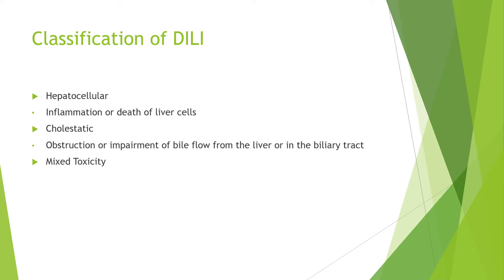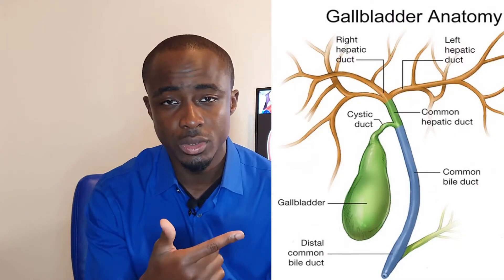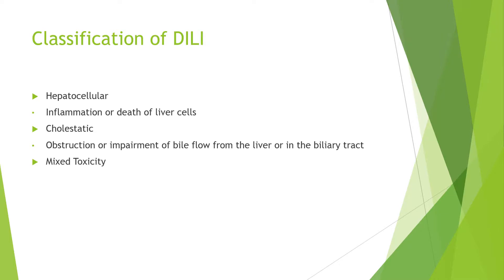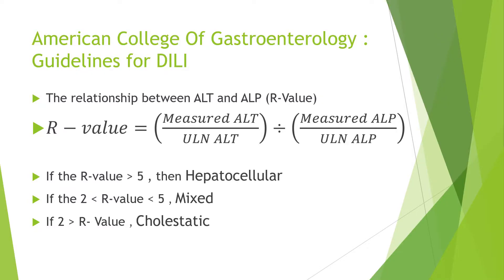There are three classes of drug-induced liver injury. The first class is hepatocellular, from inflammation of the liver cells. The next class is cholestatic, from impairment or reduction in bile flow from the liver, or from an obstruction in the biliary tract. The next class can be a mixture of hepatocellular and cholestatic. A proposed method to determine which type of damage a patient is suffering from is stated in the guidelines for DILI by the American College of Gastroenterology, done by evaluating liver enzyme abnormalities and calculating the relationship between the ALT and the ALP.